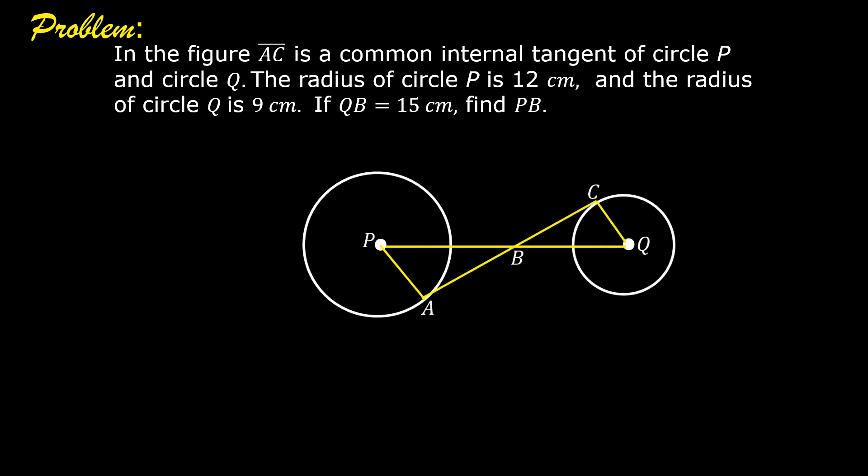Let us read the problem. In the figure, segment AC is a common internal tangent of circle P and circle Q. The radius of circle P is 12 cm and the radius of circle Q is 9 cm. If QB is 15 cm, find PB.